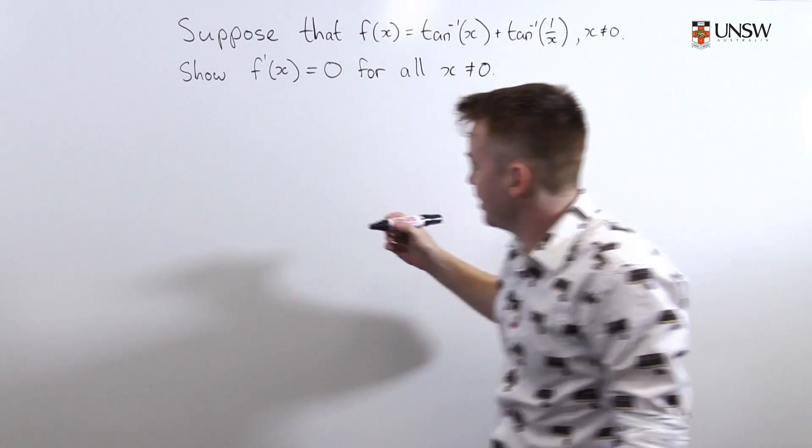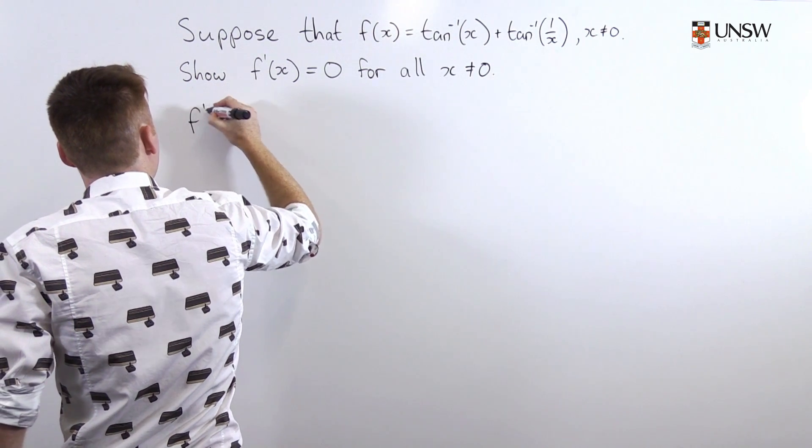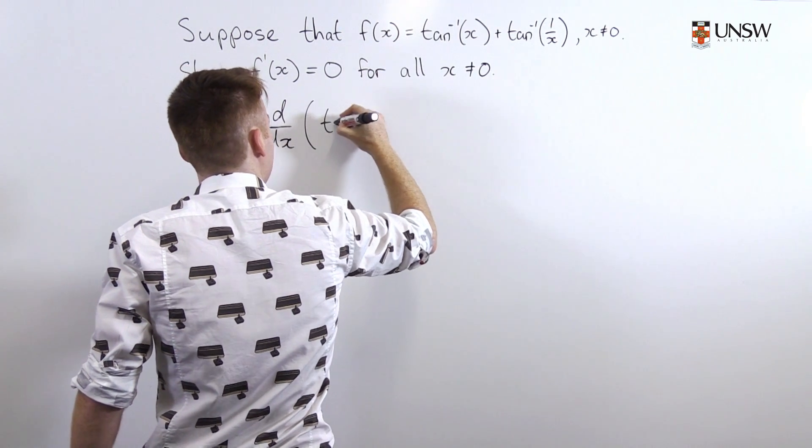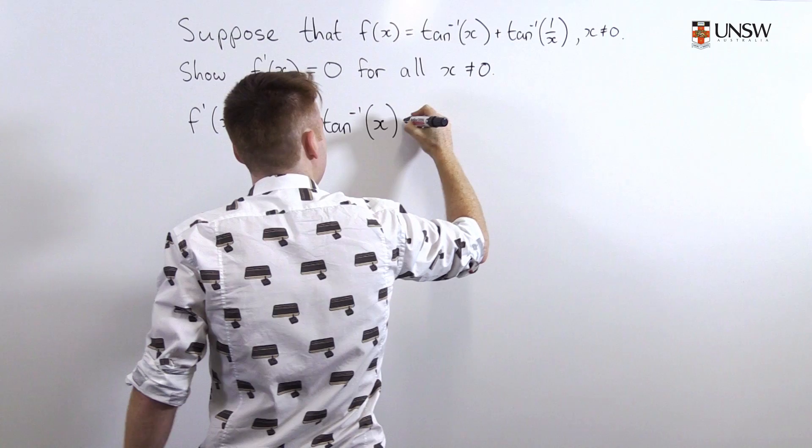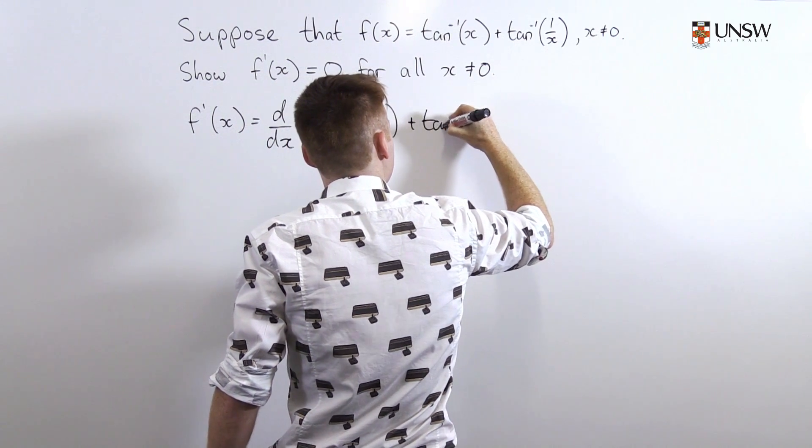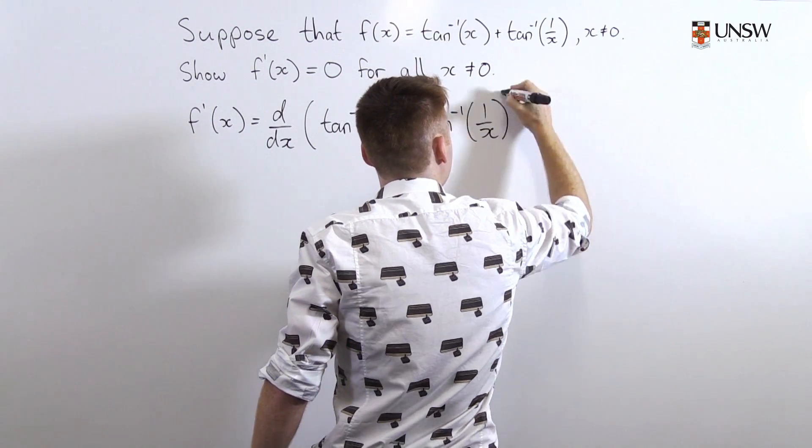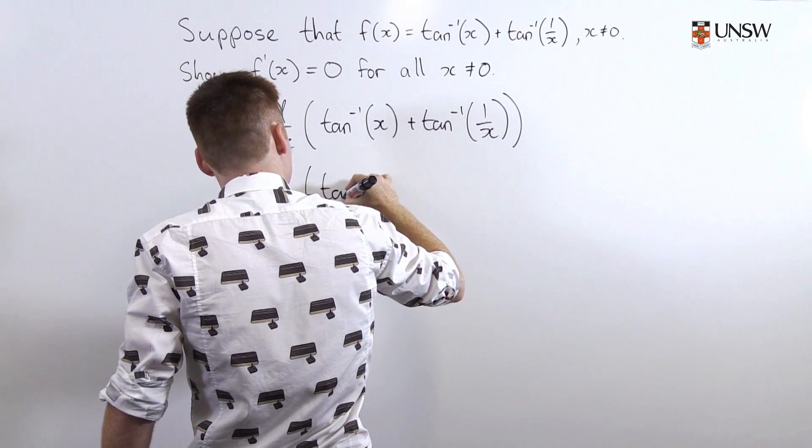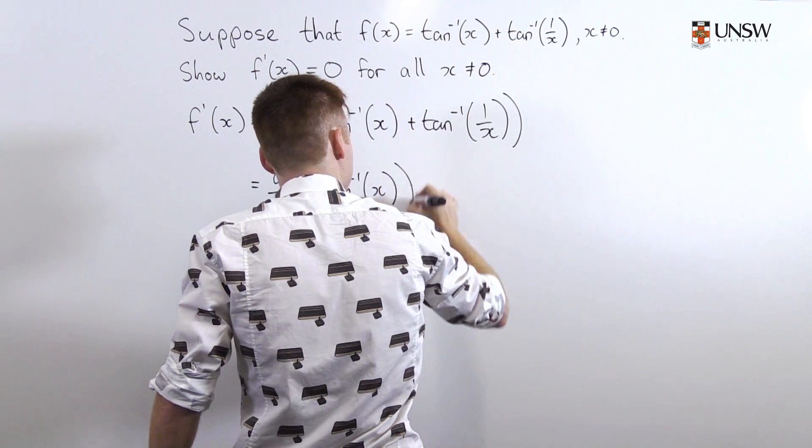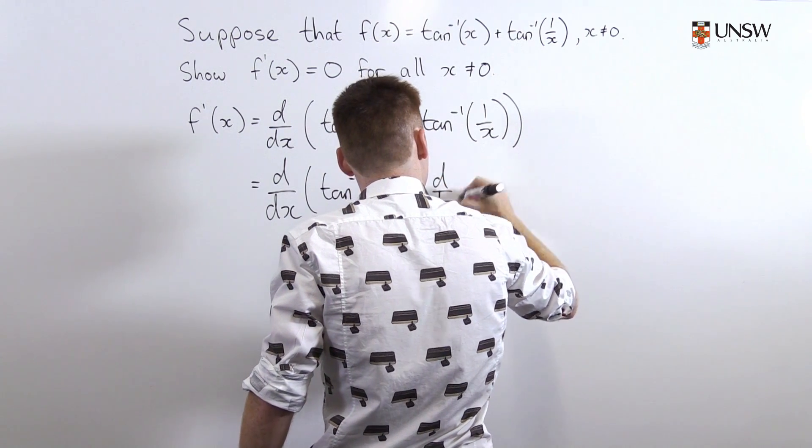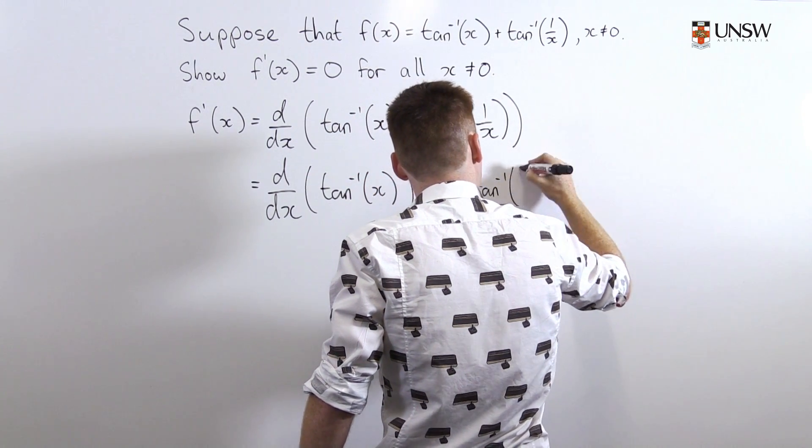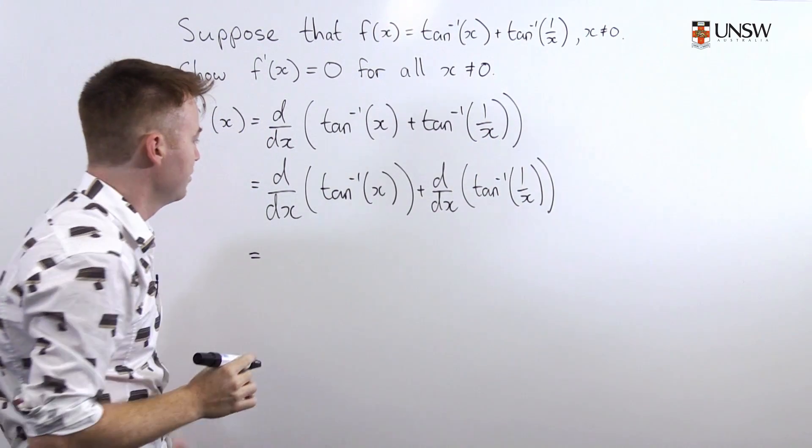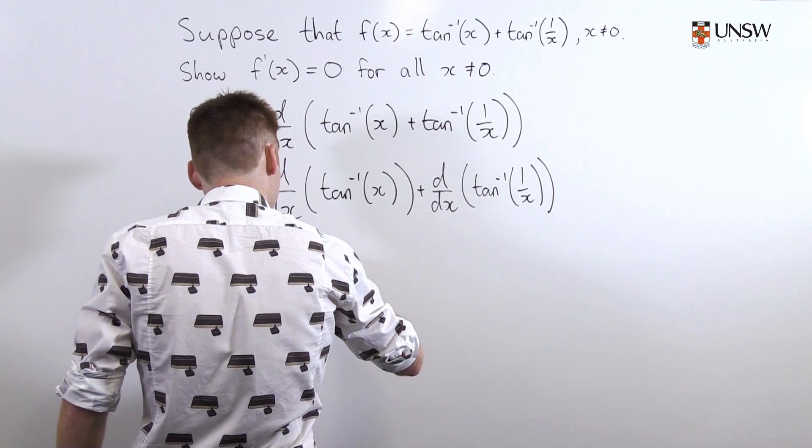Well, we can take the derivative of the function f which is f'(x) equals d/dx of tan⁻¹(x) plus tan⁻¹(1/x), which is equal to d/dx... This one is fairly straightforward. That's just 1/(1 + x²).